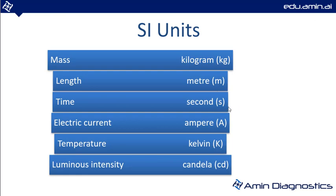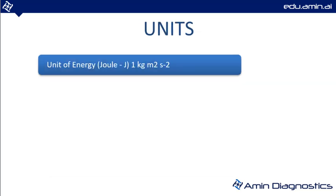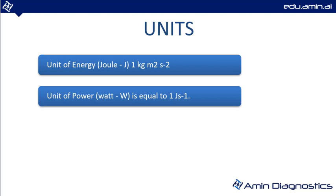Just to remember: for electric current it is ampere, for time it is second, for length it is meter, and for mass it is kilogram — these are the important ones, especially electric current. The unit of energy is joule, which is one kilogram meter squared per second squared. For power it is watt, denoted by W, equal to one joule per second.